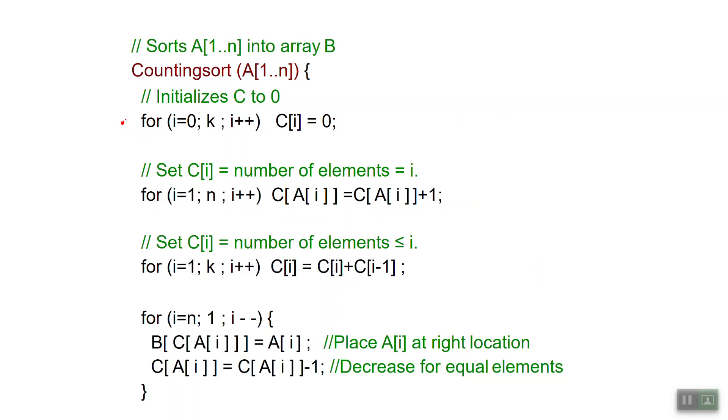In the second for loop we want C[i] to contain the number of elements which are equal to i in my input array. That's done with the following for loop that goes from 1 to n in which we iteratively increase by 1 the location A[i] in the array C.